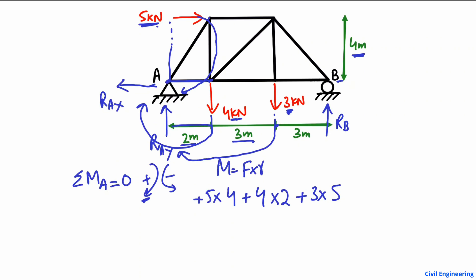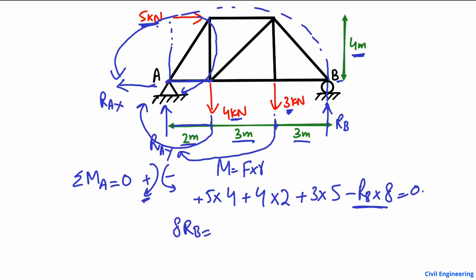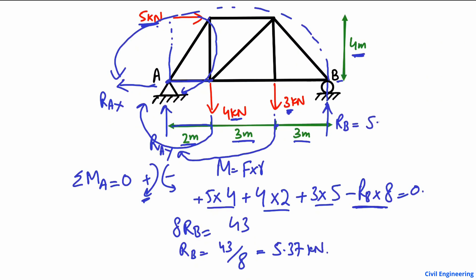There is also a force at support B which creates an anticlockwise moment about point A, so it is negative: minus RB multiplied by its moment arm, which is 3 plus 3 plus 3 plus 2 — a total of 8 meters. Setting the summation of all moments about point A equal to zero and solving, we get 8·RB = 43, so RB = 43 ÷ 8 = 5.375 kN. The support reaction at B is 5.37 kN.